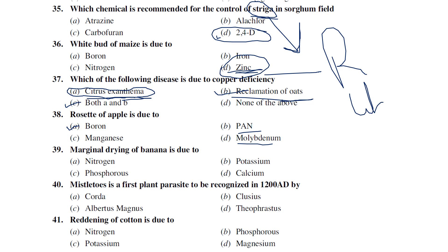Marginal dying of banana is due to potassium deficiency. Mistletoe is the first plant parasite to be recognized — it was recognized by Albertus Magnus (a church priest), who is the first person to discover the world's first plant parasite, mistletoe.